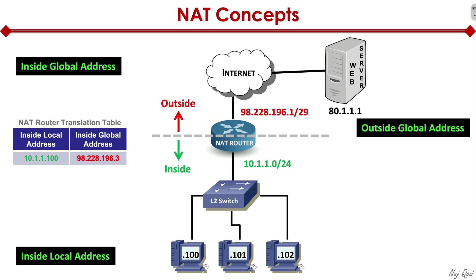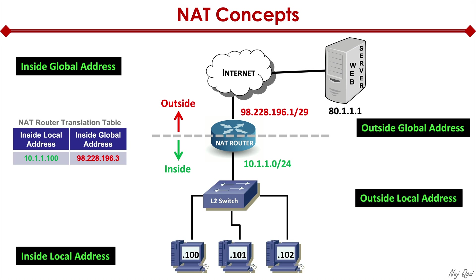The web server we're trying to access — 80.1.1.1 — is considered an outside global address. It's outside because it's outside our network, outside our control, and outside our administration. Whoever has that web server controls that IP, their domain name, and the IP mapped to it. It's global because it's routable on the internet.